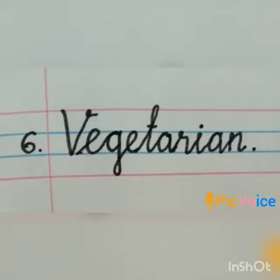Sixth one: Vegetarian. Vegetarian means those who eat only plant products and milk products — saiva unavu. This includes plants products and milk products: fruits, vegetables, milk, butter, cheese. V, E, G, E, T, A, R, I, A, N. Vegetarian.